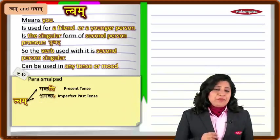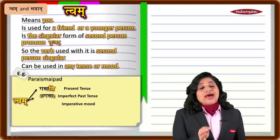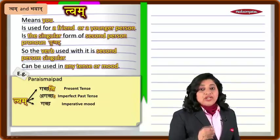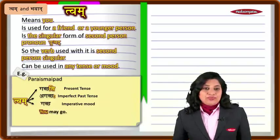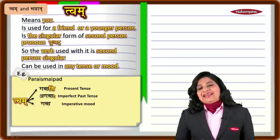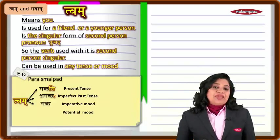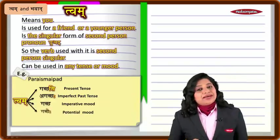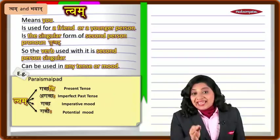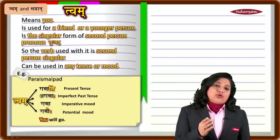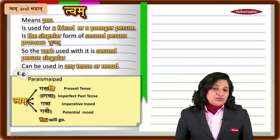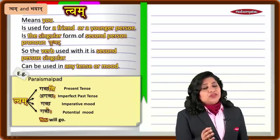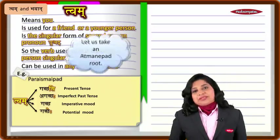In the imperative mood: 'twam gaccha,' meaning 'you may go.' In the potential mood: 'twam gacchet,' meaning 'you will go' or 'you would go.' Now, just as we have a parasmaipada dhatu, we can also have an ātmanepada dhatu.